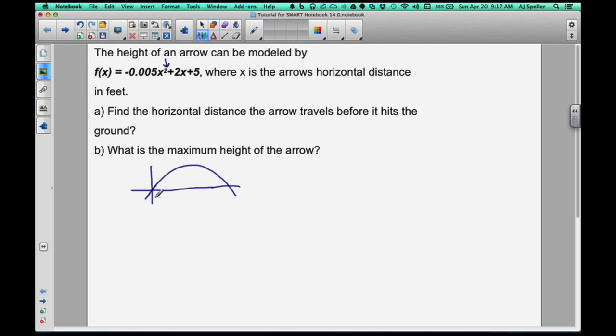When that arrow is shot, we have the x-axis, which is here. And this x-axis is going to be the horizontal distance that this particular arrow travels. What they're asking in this question is, how far does that arrow travel before it hits the ground? We know that when the arrow hits the ground, its vertical height has to be 0. So in this example, we're going to set f(x) or the value of y to 0. So let's begin.